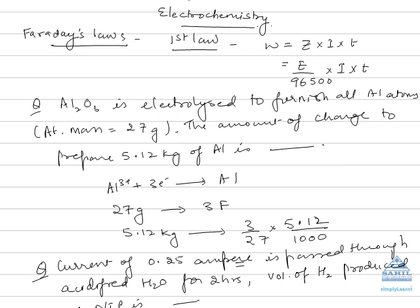In electrochemistry we have two important topics: one is electrolysis and the other is electrochemical cell. Faraday gave some laws based on electrolysis. The first law states that the mass of the substance deposited is equal to Z × I × t, where I × t is the amount of charge deposited, equal to Q.